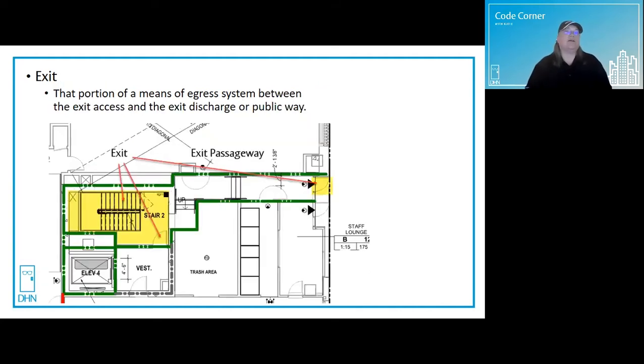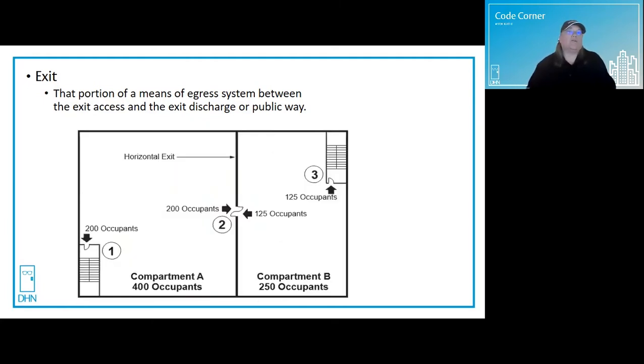And that is the exit, which is that portion of a means of egress between the exit access and the exit discharge or public way and safety. Exit components include exterior exit doors at the level of exit discharge, as well as interior exit stairways and ramps, exit passageways, exterior exit stairways and ramps, and horizontal exits.